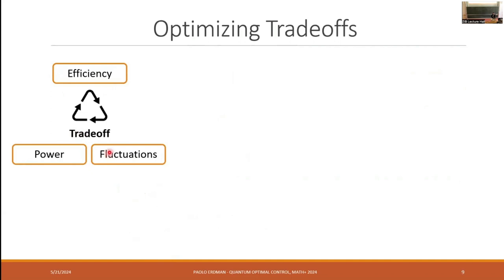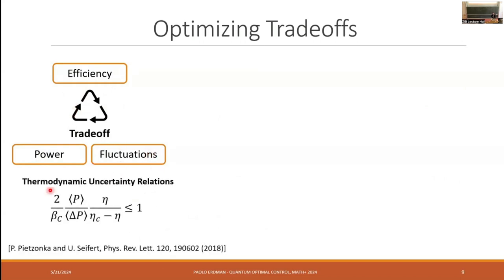So we know that there is fundamentally trade-off between these three quantities, so we cannot simultaneously optimize them. I guess between power and efficiency, it's quite intuitive. If you have an engine that's really powerful, it has low efficiency, and vice versa. And even power fluctuations enter this trade-off. As was nicely shown, for example, in these so-called thermodynamic uncertainty relations, this inequality between these three quantities shows that if you want low power fluctuations, then you will have to sacrifice either power or efficiency, and so on.